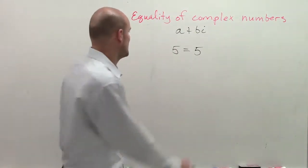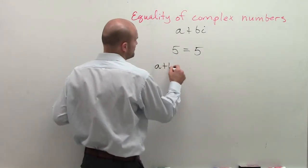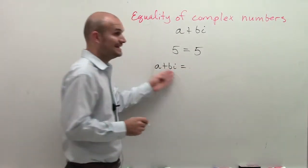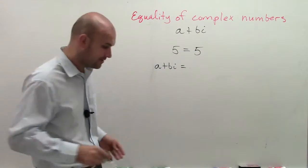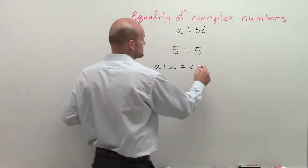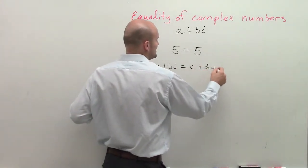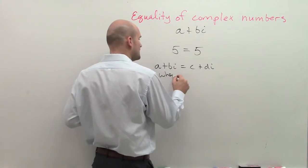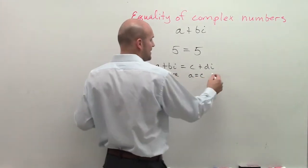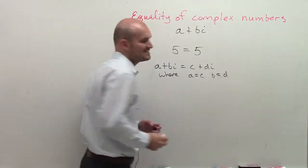So the equality of complex numbers, if I have a plus bi, that has to equal that exact same part, right? But we'll just call it something different. We'll just call it c plus di, where a has to equal c, and b has to equal d.